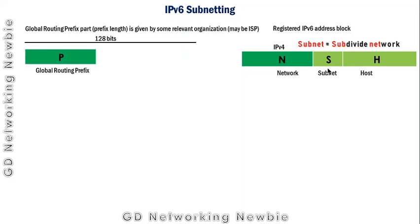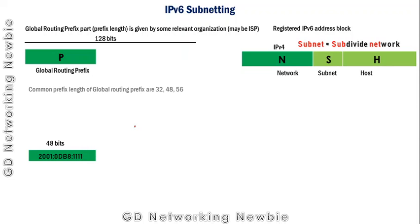For example, this is the global routing prefix assigned to us by the ISP, and we write it with slash 48 as the prefix length. The common prefix lengths for a global routing prefix are /32, /48, and /56. Out of the 128 bits of an IPv6 address, the global routing prefix occupies this many bits.